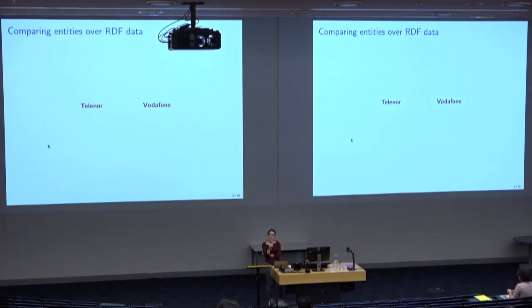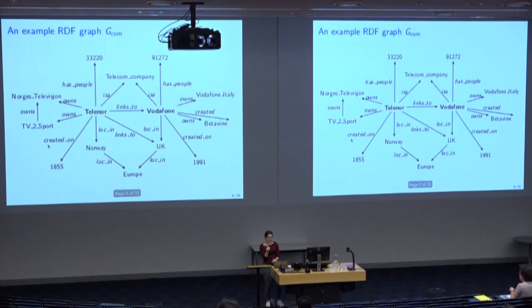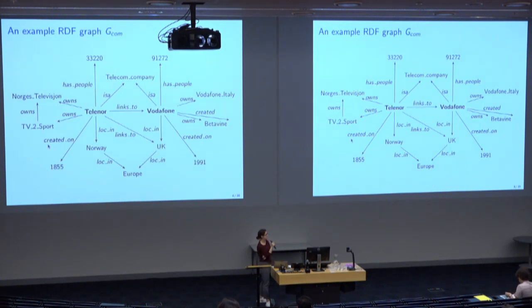If we would like to fully unlock comparison over graph data, we need to go beyond domain-dependent predefined schemas and beyond fixed depth of analysis. For instance, I would like to compare two companies, Telenor and Vodafone, using the information about them in the Yago knowledge graph.